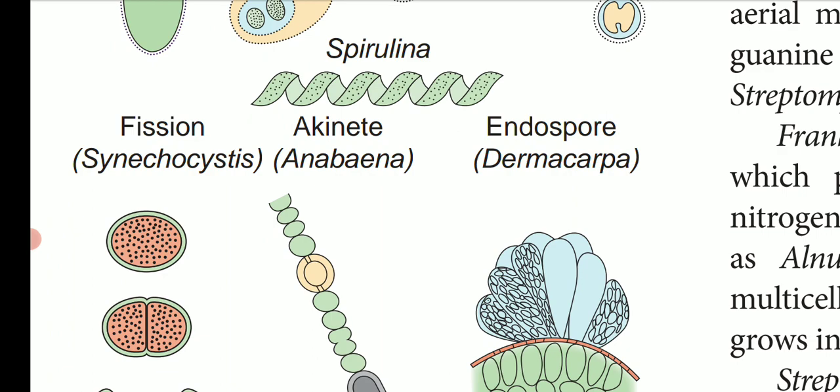Akinetes are resting spores — for example, in Anabaena, a blue-green alga. Endospore formation also occurs — for example, in Dermocarpa. These diagrams show the structure of some cyanobacteria and the reproduction which takes place in cyanobacteria.